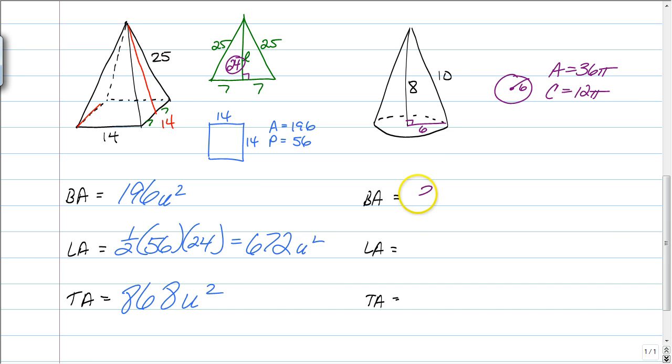So, the base area, just found it, 36 pi units squared. Our lateral area is one half of our circumference, which is 12 pi, times the slant height we know is 10. And that will give us a grand total of 60 pi units squared.